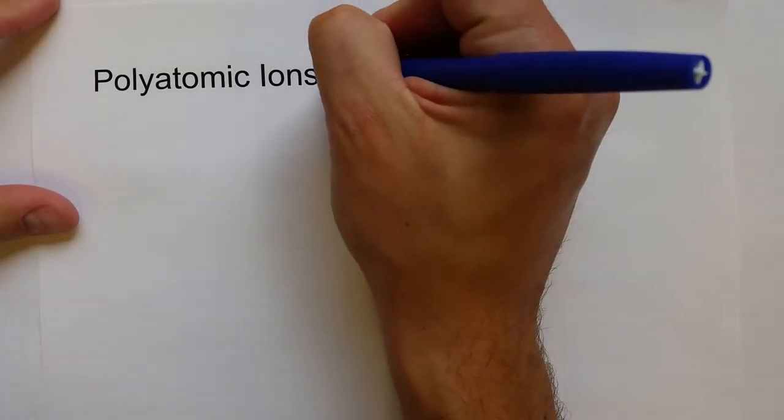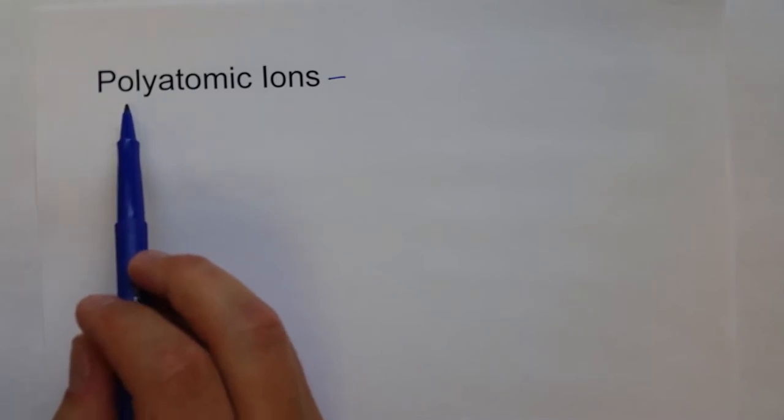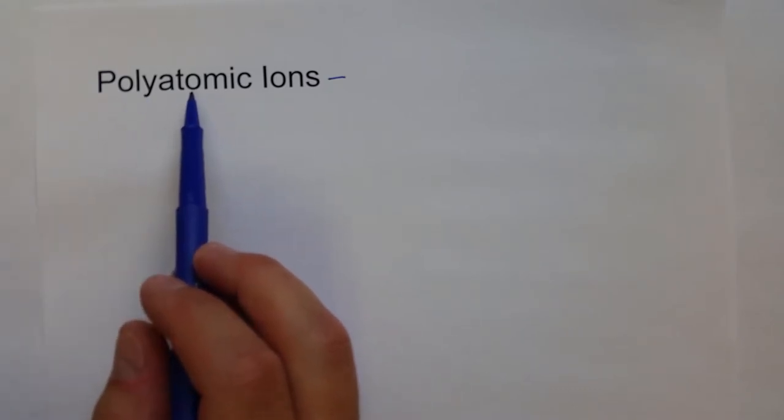All right, so another type of ion that we need to discuss before we start forming ionic compounds are polyatomic ions. And as the name tries to tell you, there's poly more than one atom that is an ion, so it has a charge.